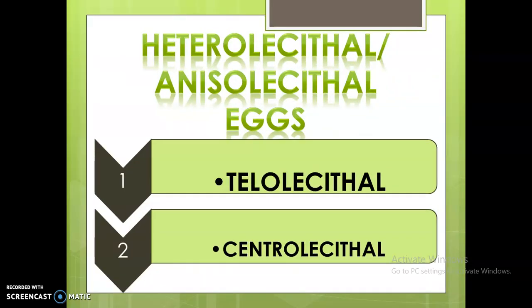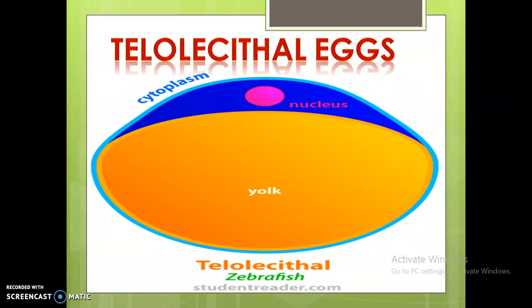Heterolecithal eggs have yolk unevenly distributed in the cytoplasm. Depending on the pattern of yolk distribution, they are categorized as telolecithal and centrolecithal. In telolecithal eggs, they are very large, containing an enormous amount of yolk concentrated at the vegetal pole. The yolk concentration is smallest at the animal pole. The active cytoplasm and germinal vesicle nucleus remain confined to a small cap at the animal pole. Mesolecithal and macrolecithal eggs exhibit telolecithality.